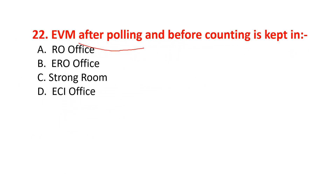Where is the EVM kept after polling and before counting? Options are RO Office, ERO Office, Strong Room, or ECI Office. The correct option is Strong Room.